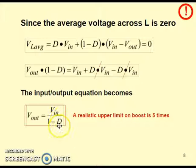If you put 1 in the denominator, you could have infinite voltage, which is not practically possible. So the realistic upper limit on the boost is 5 times. This concludes this tutorial on boost converter. Thank you.